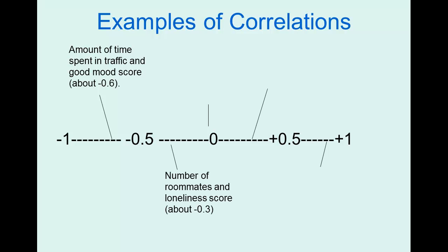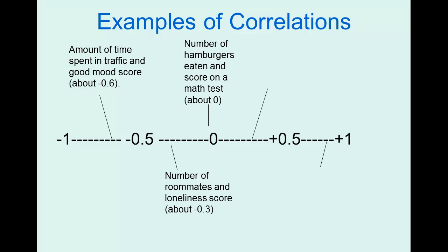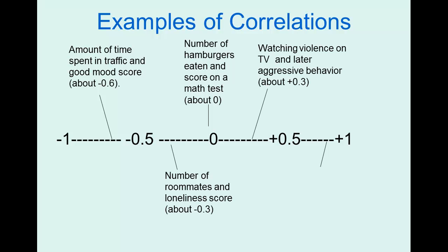A negative 0.3 for number of roommates and loneliness score is a moderately sized relationship — the more roommates you have, the lower your loneliness score. The number of hamburgers eaten and score on a math test is correlated at about 0, meaning basically no correlation. Watching violence on TV and later aggressive behaviors are correlated at about 0.3 — a moderate correlation, so the more violent TV watched, the more aggressive behavior. And one of the strongest correlations in the real world is height and weight at about positive 0.8.